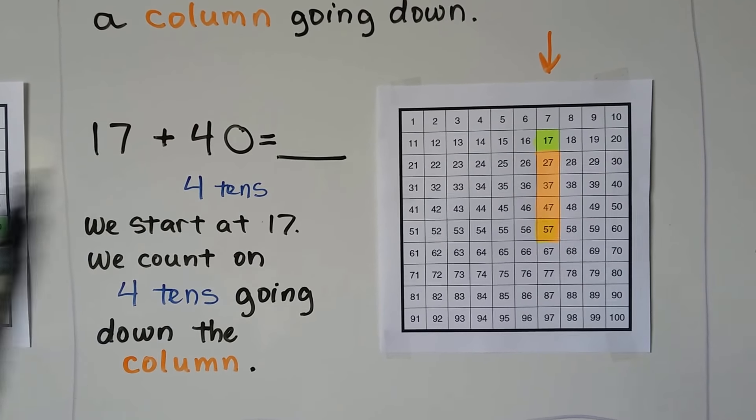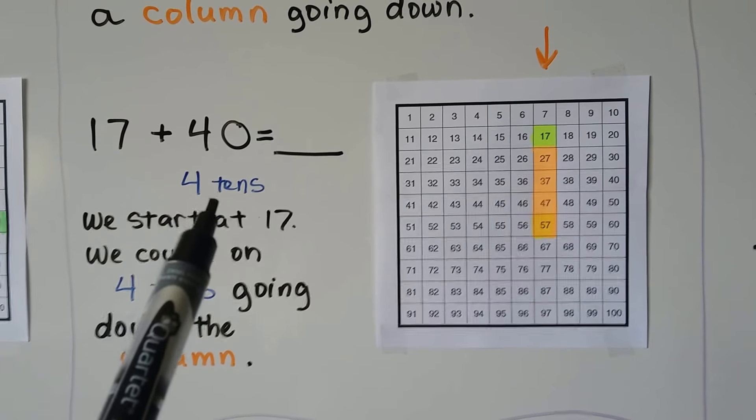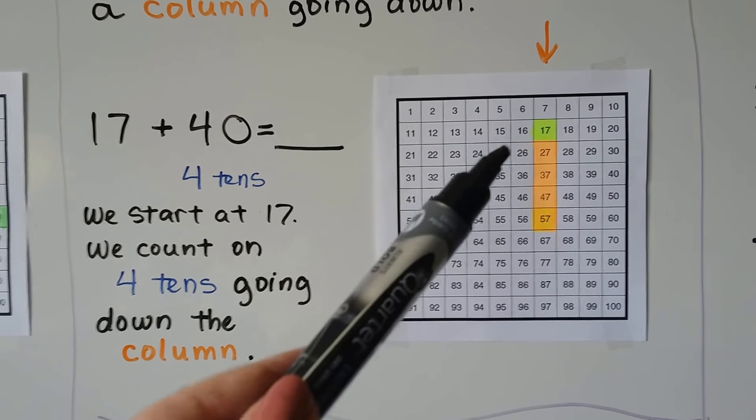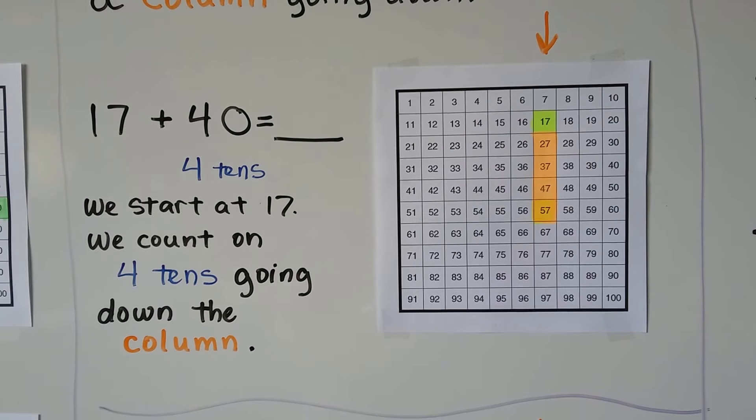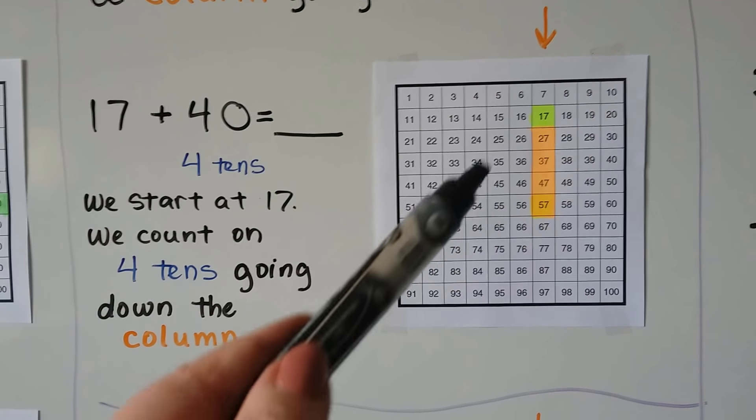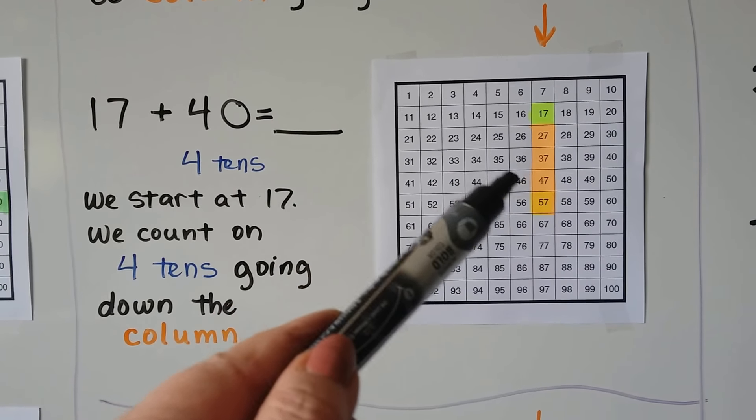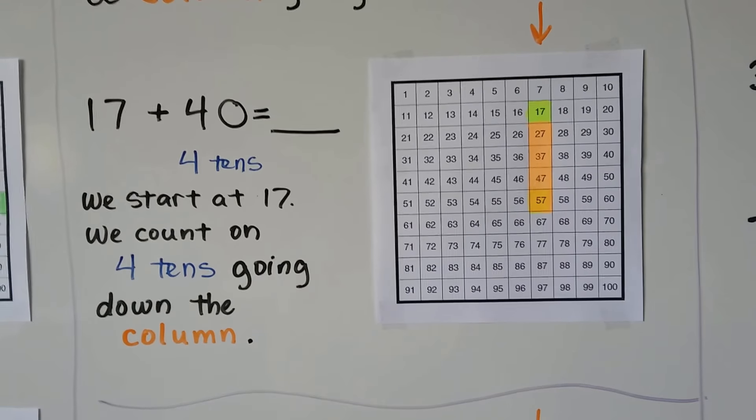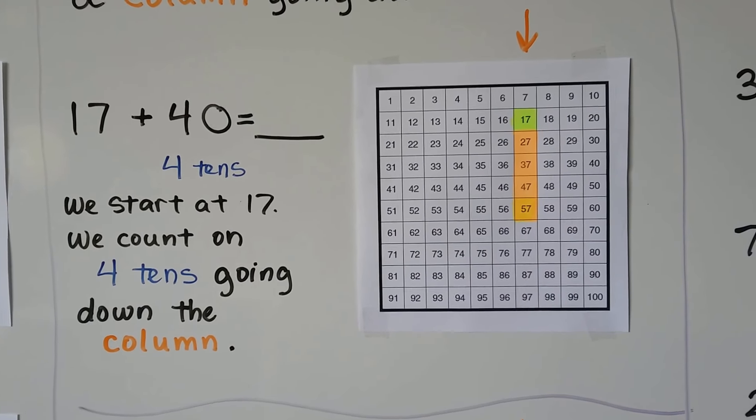17 plus 40. That's 17 plus 4 tens. We start at the 17 and we count on 4 tens going down the column. 1, 2, 3, 4. 17 plus 40 is equal to 57.